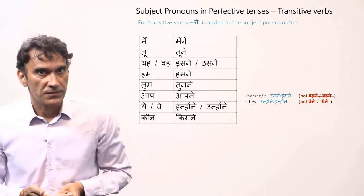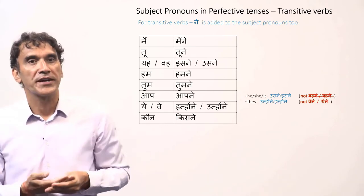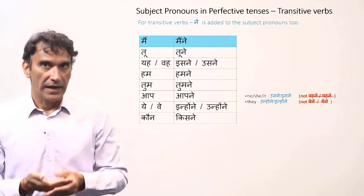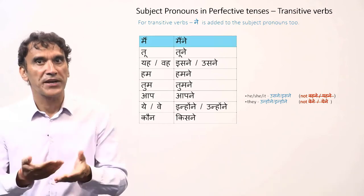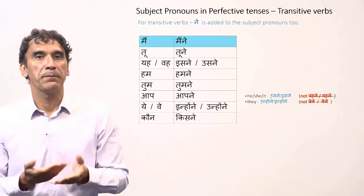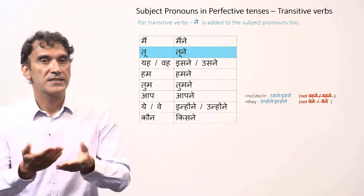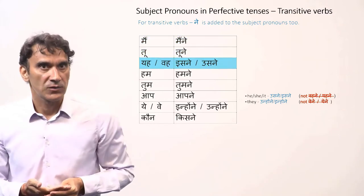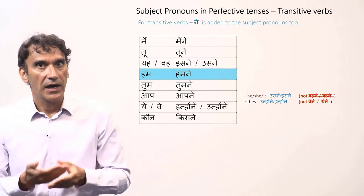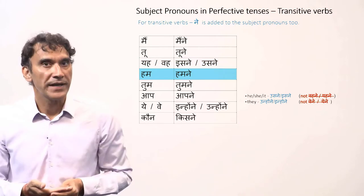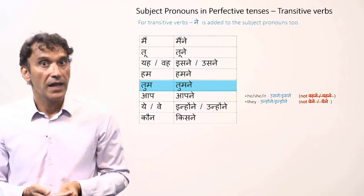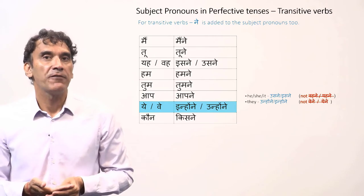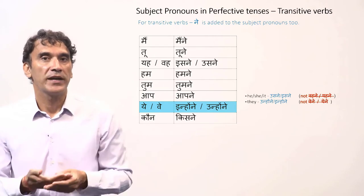Here is the list of subject pronouns with the postposition 'ne'. When the subject is 'main' (I), it takes 'ne' to make 'maine'. For 'tu' it is 'tu ne'. 'Yeh' and 'wo' will become 'isne' and 'usne'. 'Hum' will be 'humne', 'tum' will be 'tumne', 'aap' becomes 'aapne', and 'yeh' and 'we' (plural) will become 'inhone' and 'unhone'.